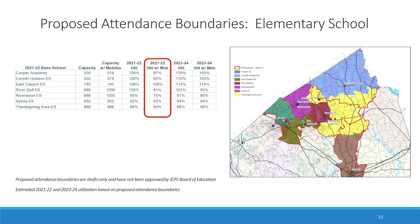The new elementary school in the Thanksgiving area will impact Corinth Holders, Riverwood, Riverdale, and Selma. In addition, Cooper and East Clayton have adjustments to their boundaries in order to provide balanced utilization across the schools.